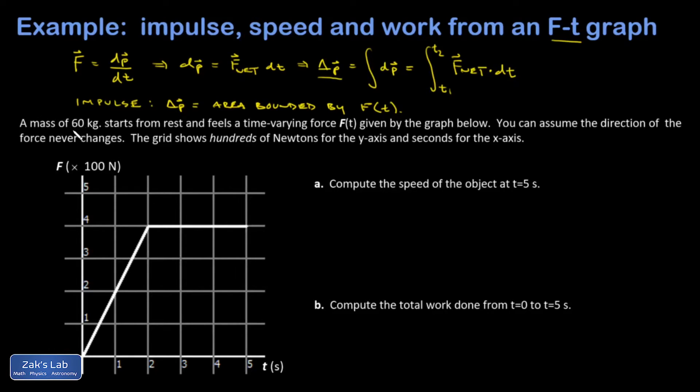This is applied to a mass of 60 kilograms that starts from rest, which should simplify things for us. And I'm asked a couple questions. First, get the speed of the object at t equals five seconds. So now that I know impulse is given by the area bounded by f of t,